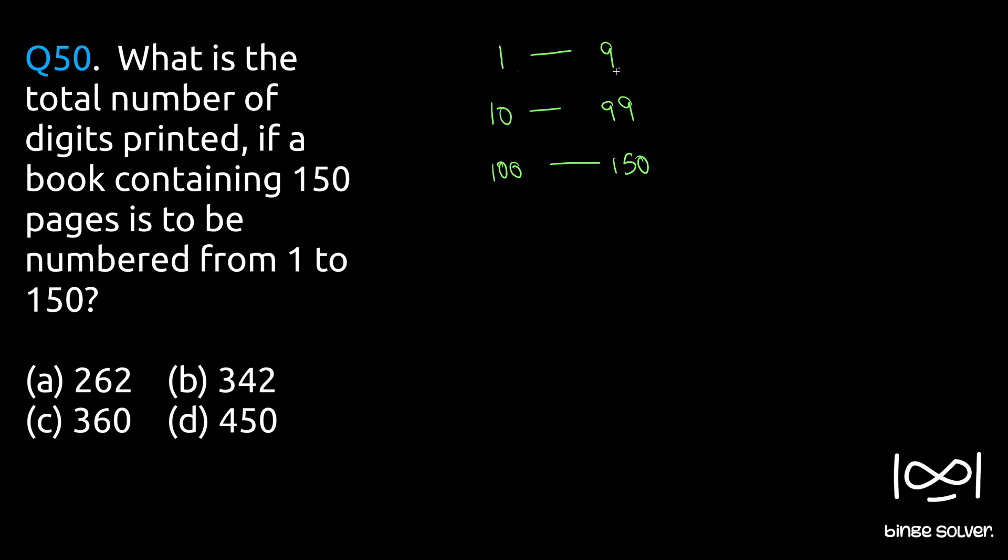The number of pages from 1 to 9, including both 1 and 9, is 9 minus 1 plus 1, which equals 9 pages. So 9 times 1 equals 9 digits required to number pages 1 to 9.